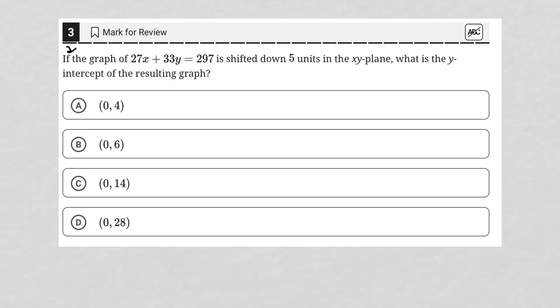So this question says, if the graph 27x plus 33y equals 297 is shifted down five units in the xy plane, what is the y-intercept of the resulting graph?